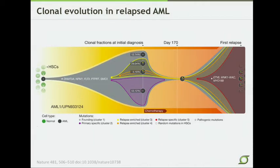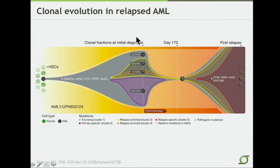It starts off with a hematopoietic stem cell which gains initiating mutations, and then as the tumor expands, some of these cells acquire additional mutations, represented here in purple, yellow, and orange. These mutations may expand, and so when we assay the tumor at diagnosis, what we're getting is really a cross-section of this clonal architecture, where some cells look like the founding clone, some are a subclone in 50 percent of cells, and others are smaller fractions.